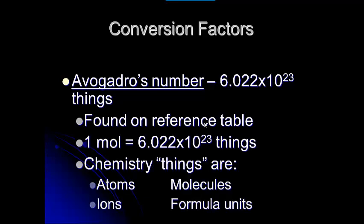We use Avogadro's number — one mole being 6.022 times 10 to the 23rd things — to convert from chemistry particles like atoms and molecules. Covalent compounds are molecules made up of atoms. Ionic compounds use the term formula units. For example, NaCl sodium chloride gives us a one-to-one ratio of sodium ions to chloride ions — that's called a formula unit. We can't really count all of the sodium and chloride ions in a salt crystal, so those are formula units made up of ions.